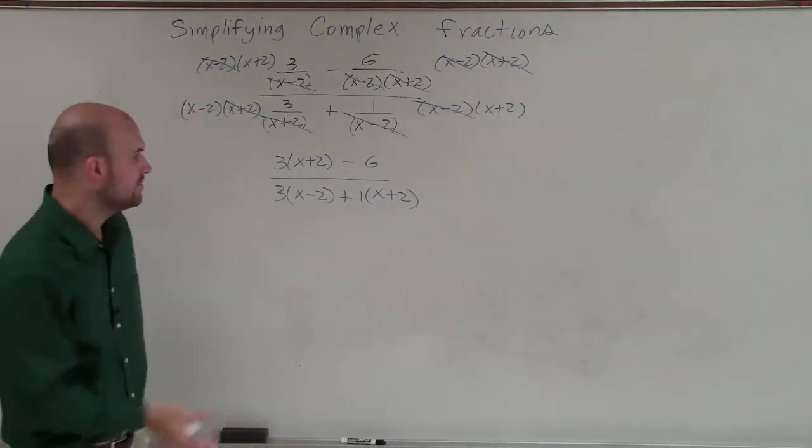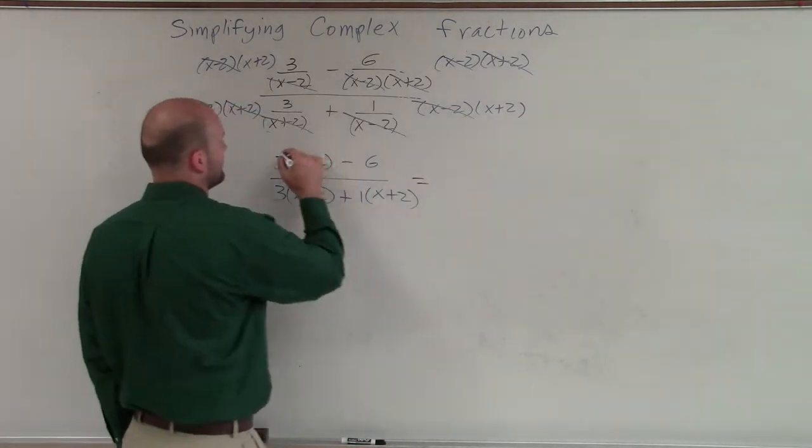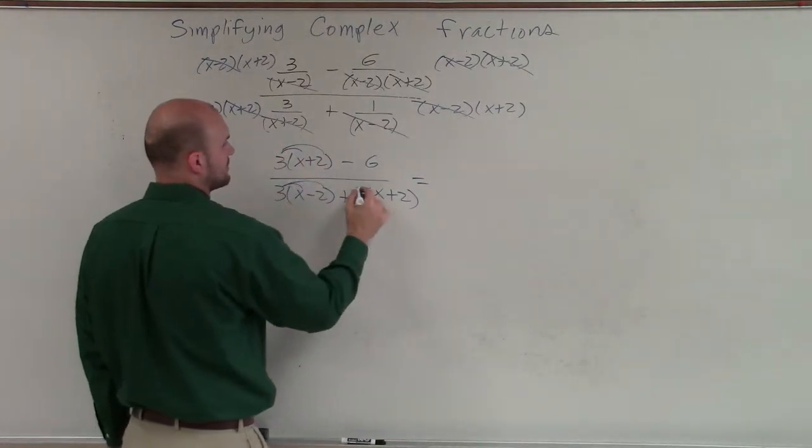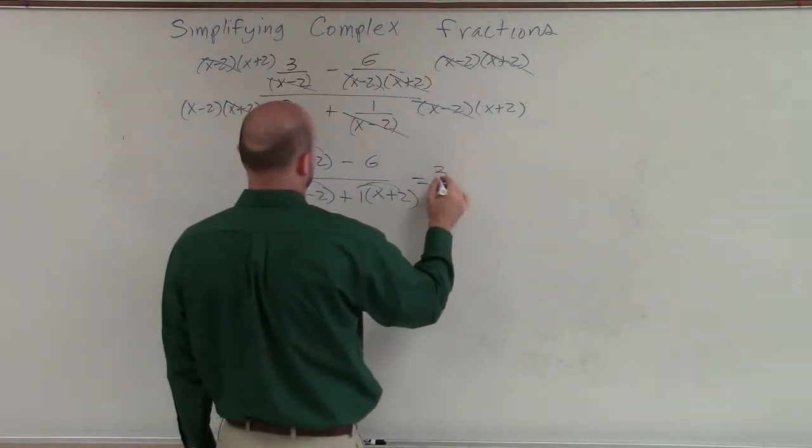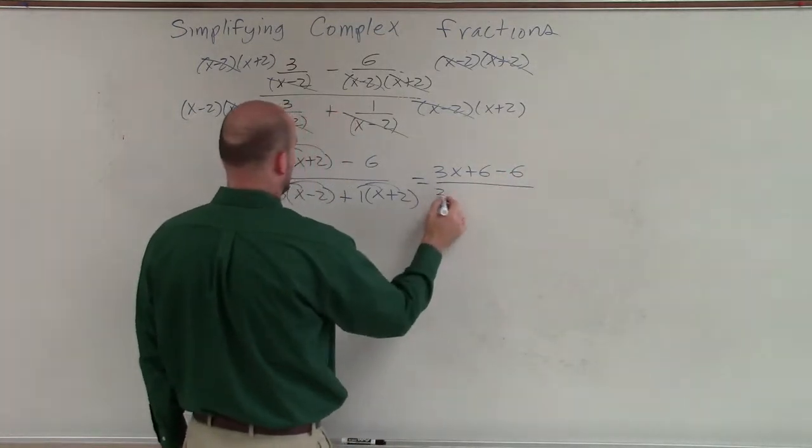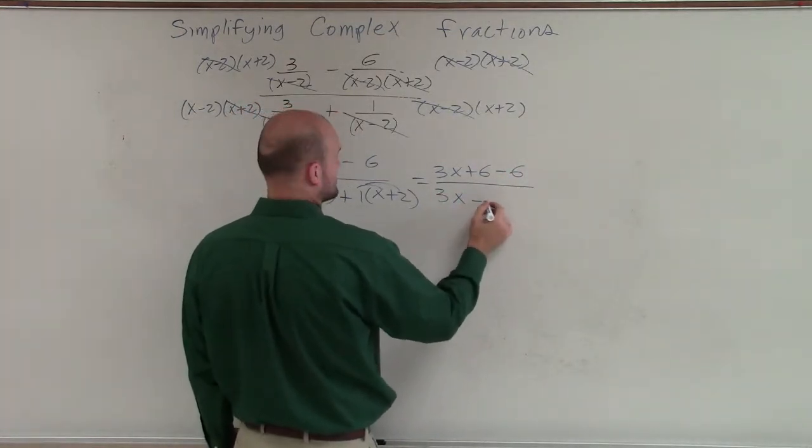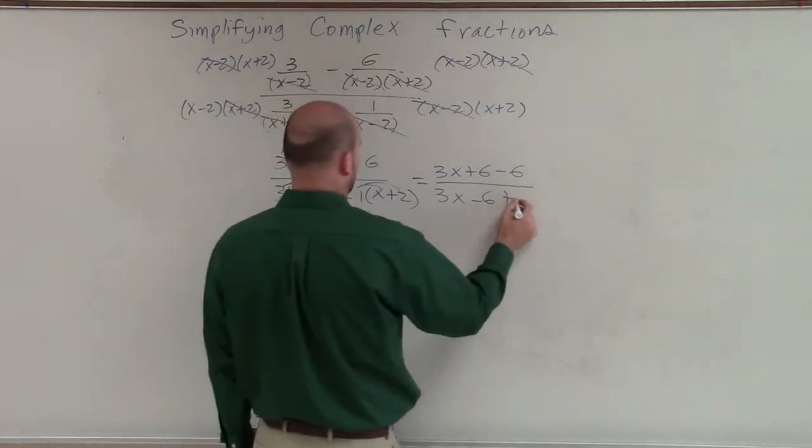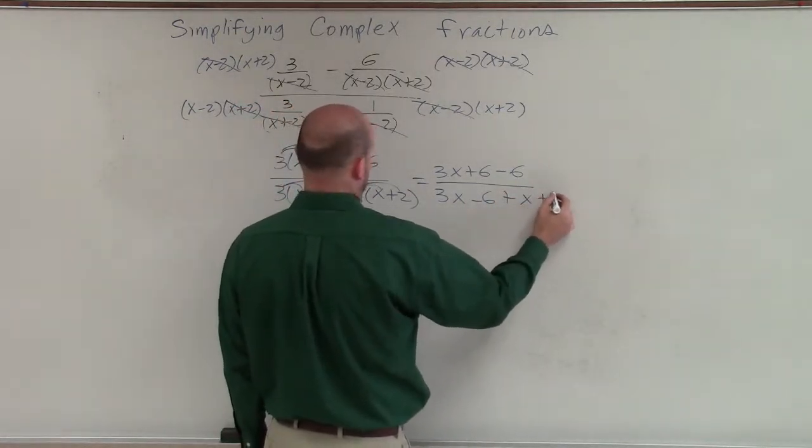So now, we can just go ahead and simplify our work a little bit. Apply a distributive property. Therefore, I'm left with a 3x plus 6 minus 6 all over a 3x minus 6 plus x plus 2.